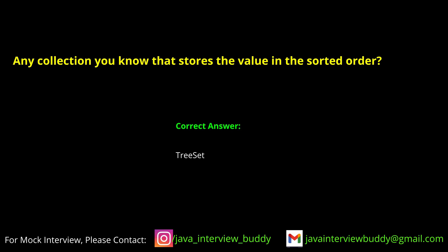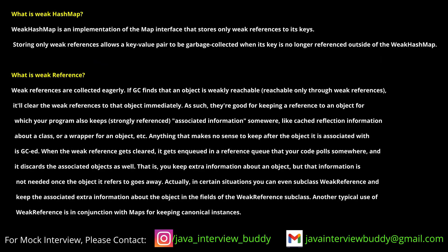Which collection stores values in sorted order? A TreeSet will store values in sorted order. When you insert, it will sort automatically. TreeSet stores values sorted, and it only stores unique values — there will be no duplicates.